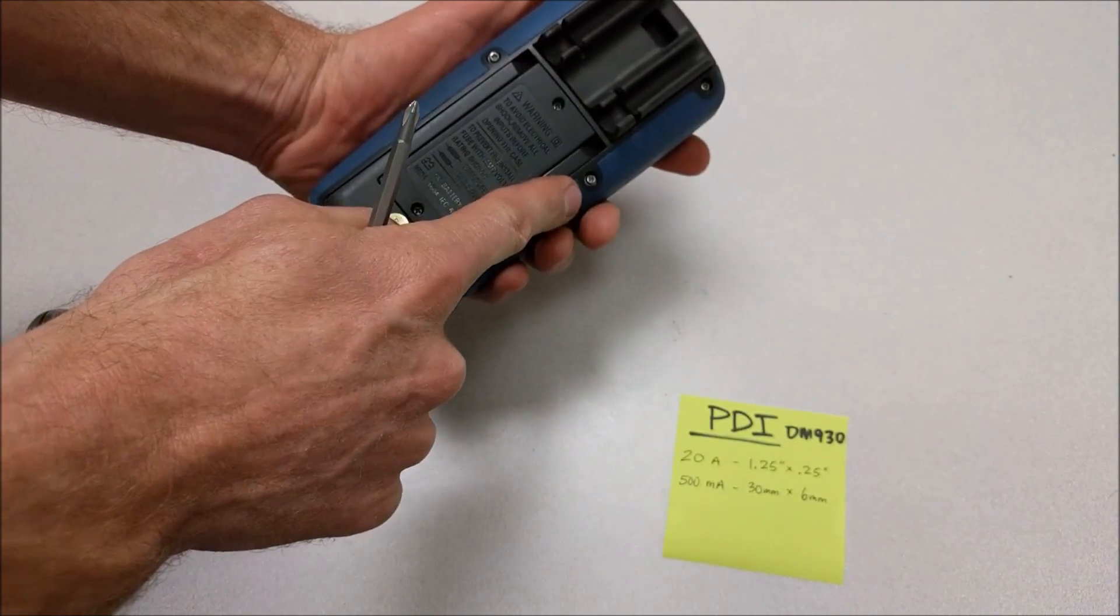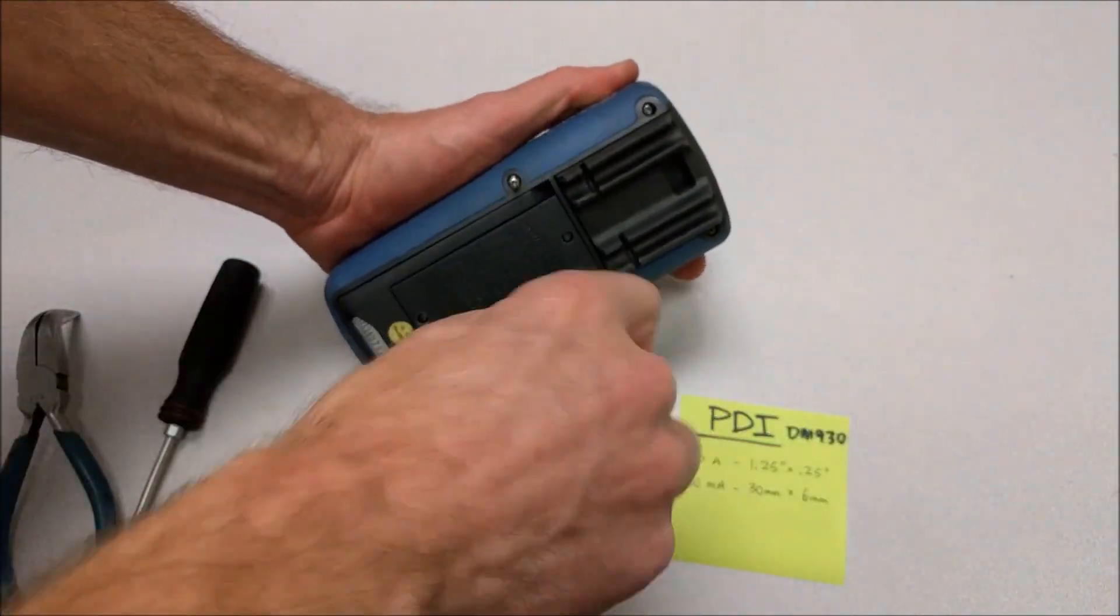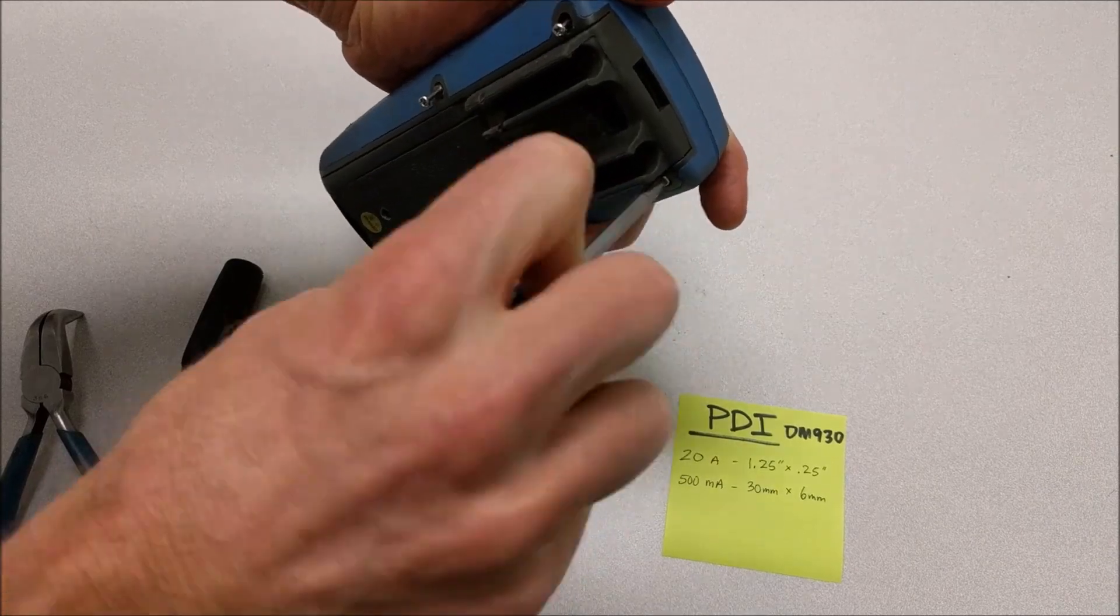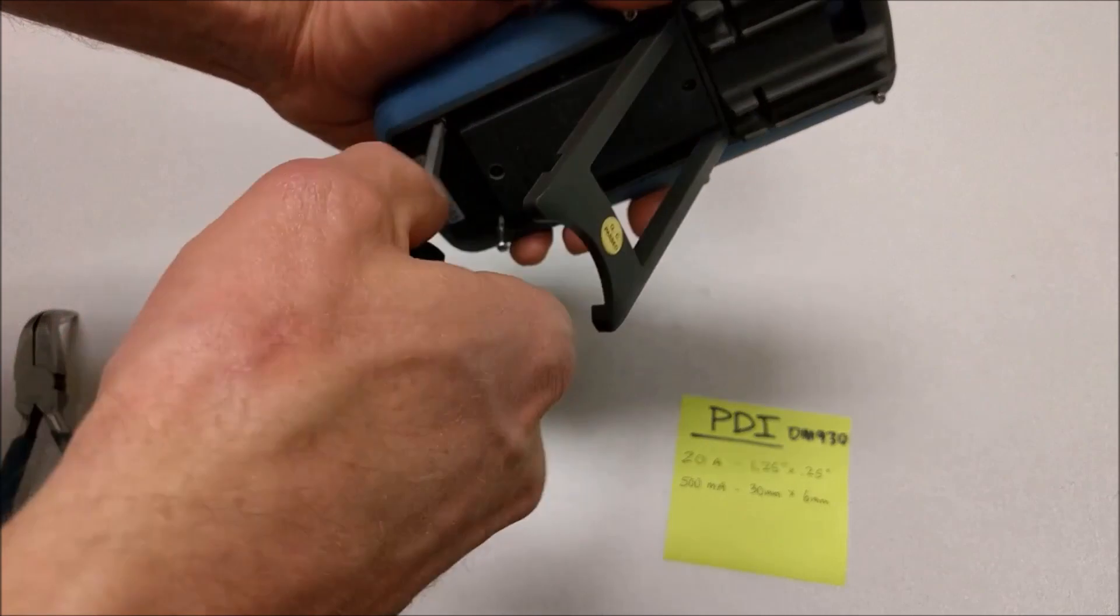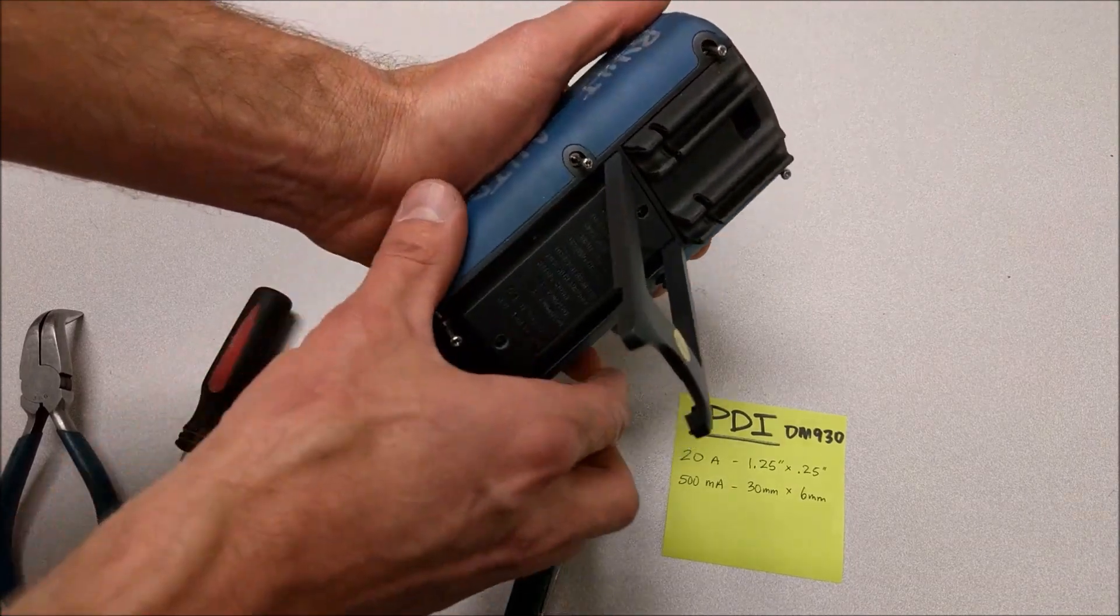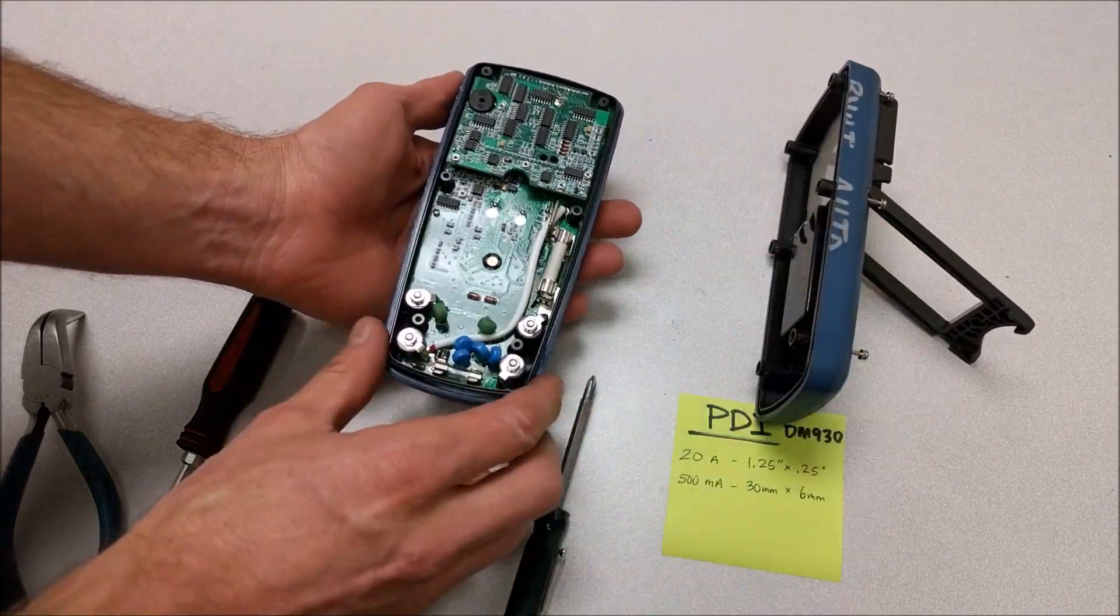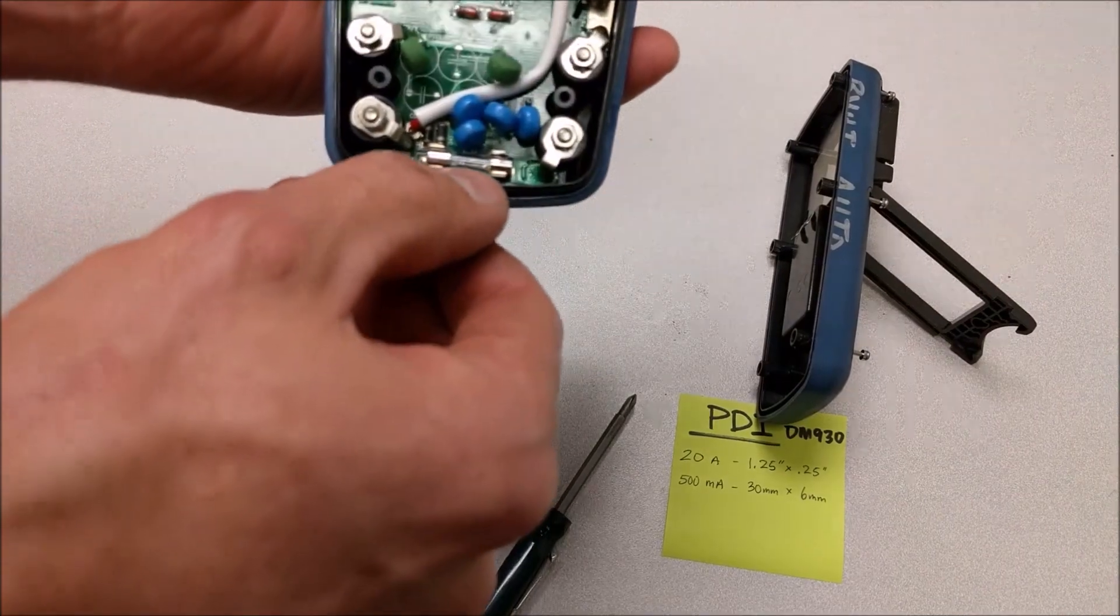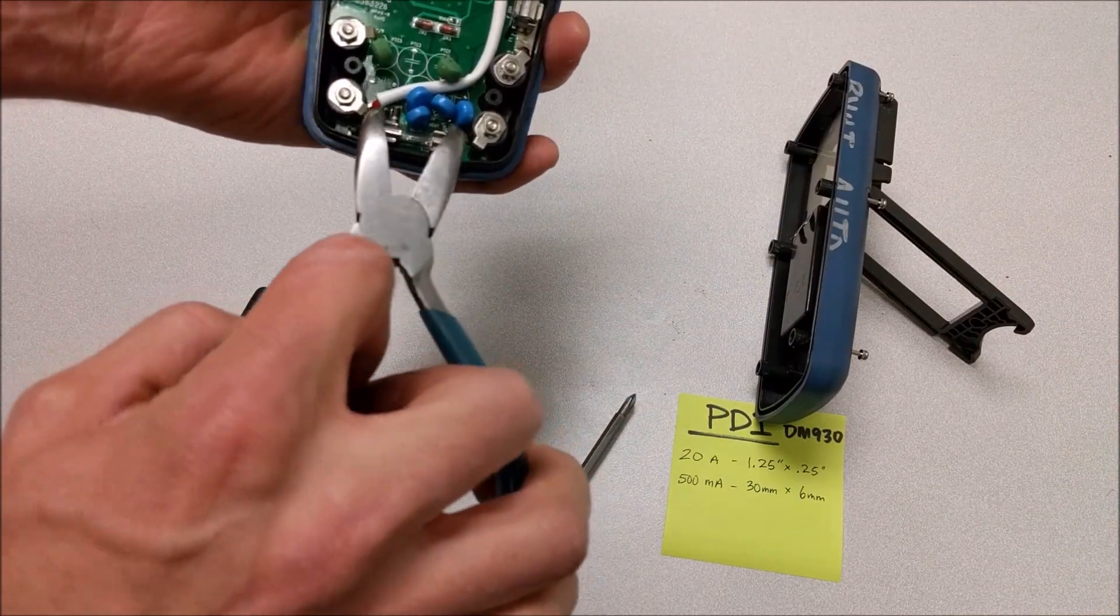These six screws right here need to all be removed. It's a lot of work to get those six screws out of there, but they're all loose now. The back cover should come off like this. And that exposes the two fuses. This is a 20 amp fuse, and this one is actually a 500 milliamp fuse, even though it's rated at 400.